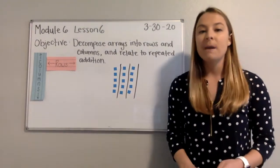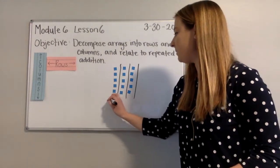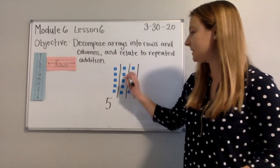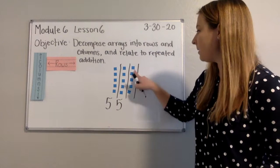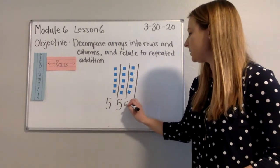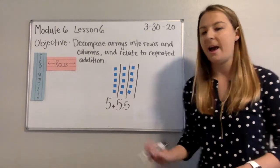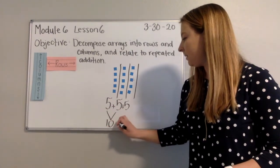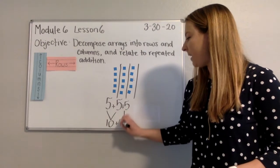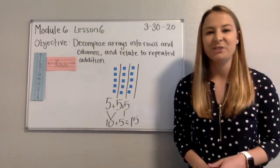Moving on to my repeated addition sentence to find the total. My first column has five counters. My second column has five counters. And my third column has five counters. Five plus five plus five plus five. I could go ahead and combine five plus five to make ten plus my leftover five for a total of 15 counters.